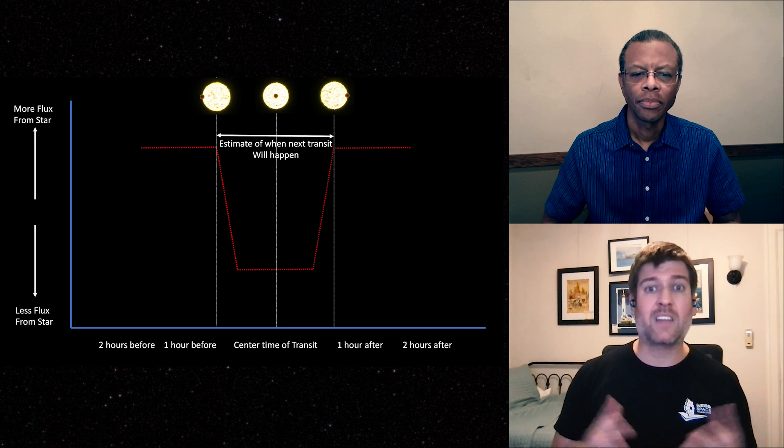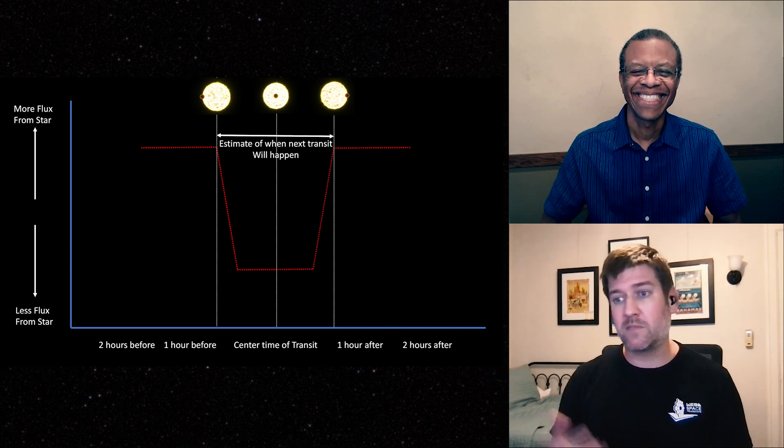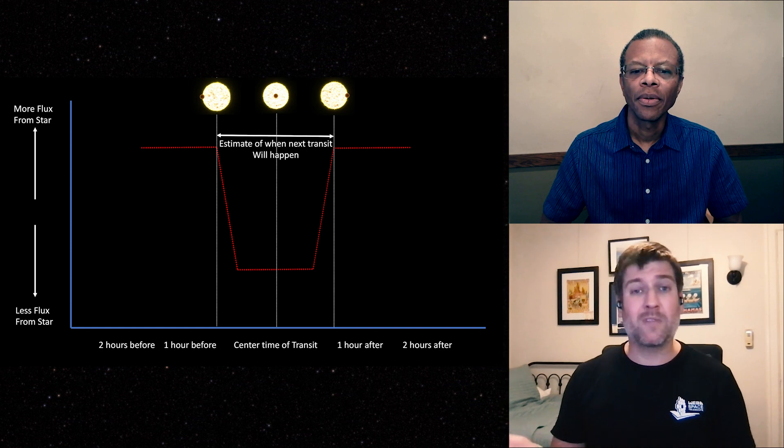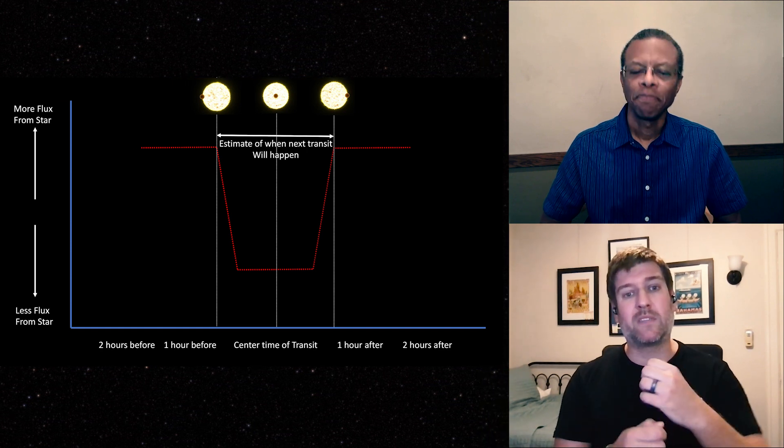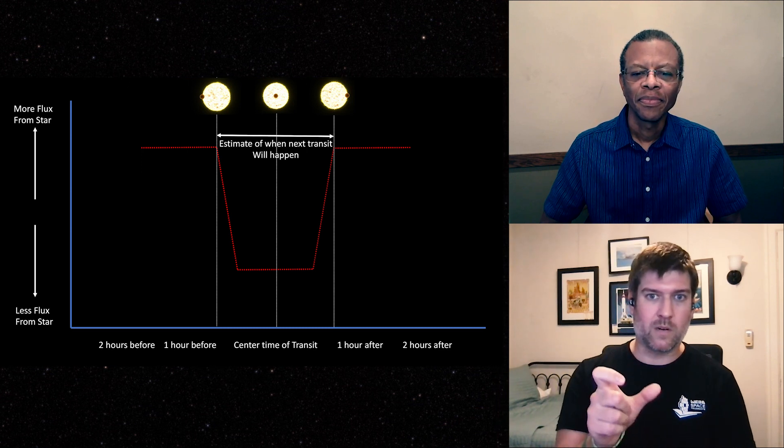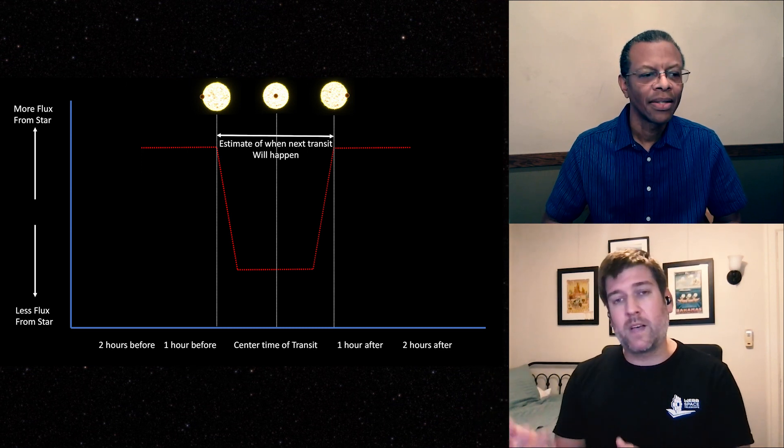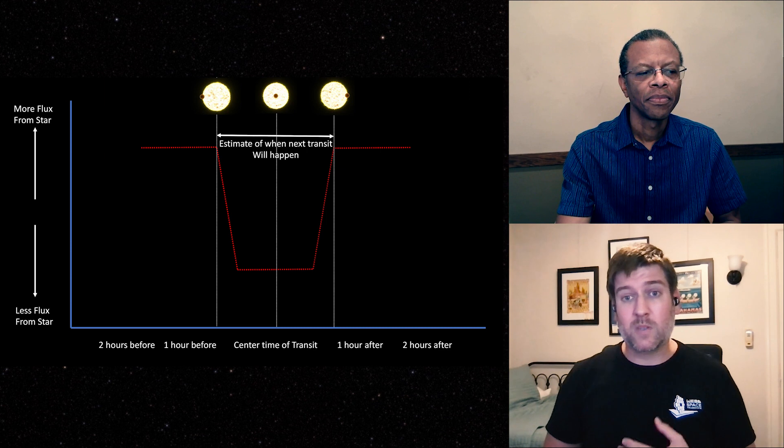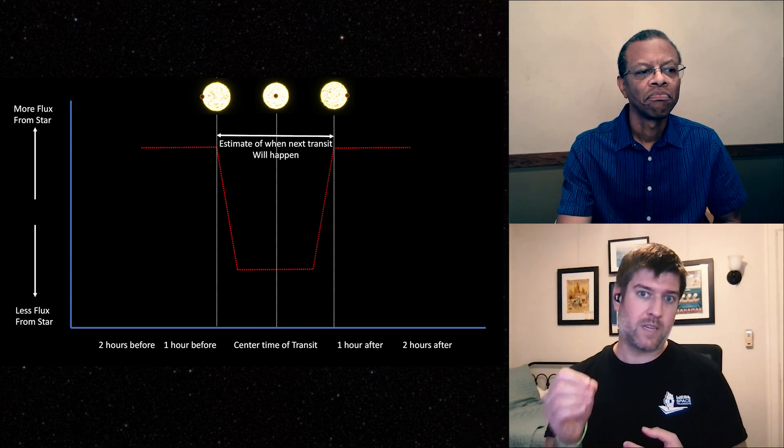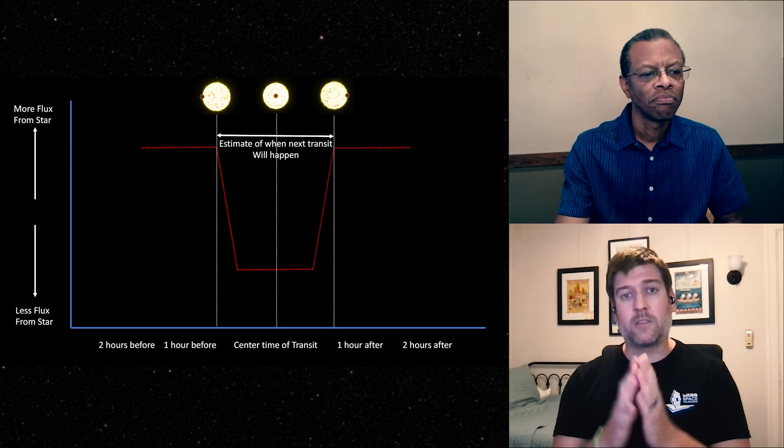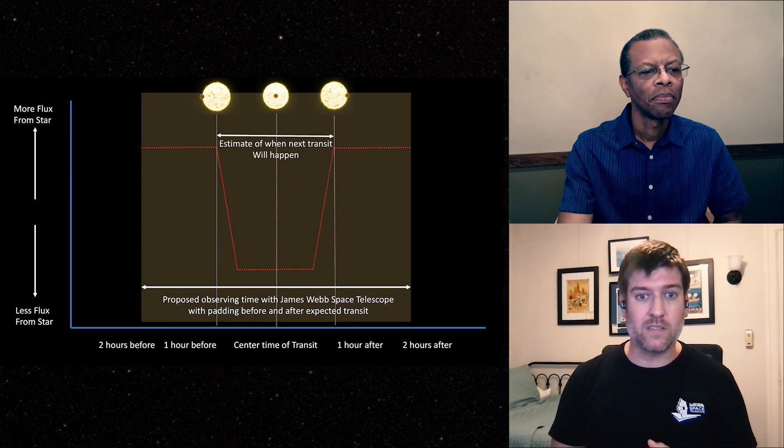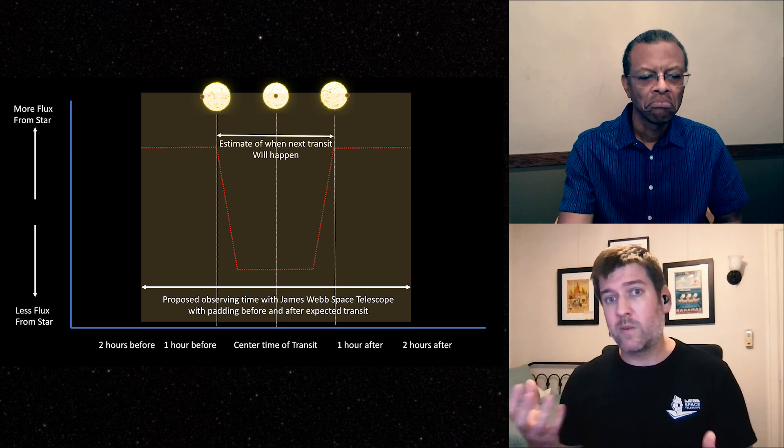But in order to do that characterization, we have to observe that transit event. So we have to know somewhat precisely when that transit will occur. So let's pretend I have a favorite exoplanet and I write to the folks that control Hubble or James Webb and I say please give me some time to observe this exoplanet. I want to observe this specific transit. I have to know very specifically when that event will occur. So what I'll do is I'll go online, I'll look at what previous folks have published in the literature to estimate when that transit timing event will occur, and I'll try to build in some overheads if there's any uncertainty in the event.